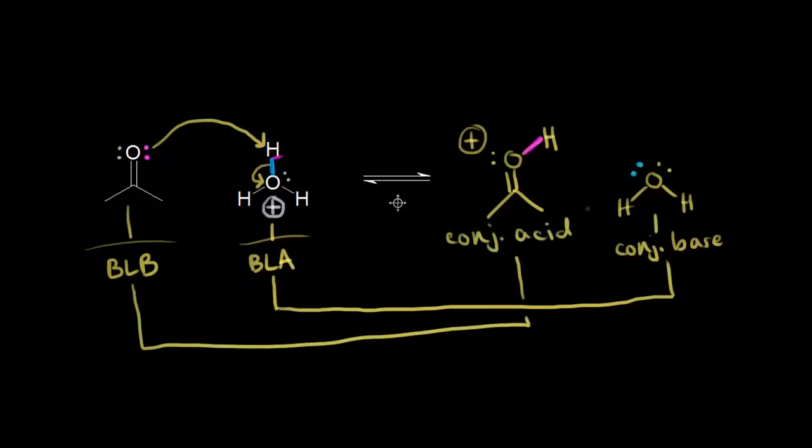We've identified our conjugate acid-base pairs and shown the movement of electrons using curved arrows. So practice your acid-base mechanisms, because they really are extremely important, and you have to be able to do them fairly quickly when you're writing an organic chemistry mechanism.